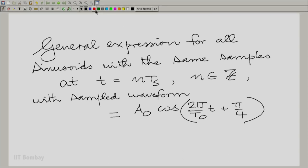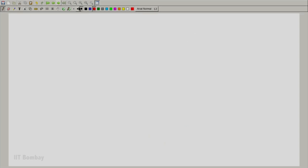So, we have this original waveform here, the original sinusoid. And we have sampled this sinusoid by replacing t equal to n times t_s, and t_s is t_0 by 4. We are asking all those sinusoids which have the same samples at the same points.